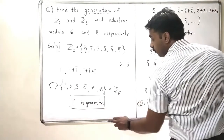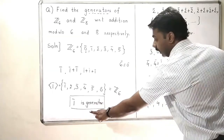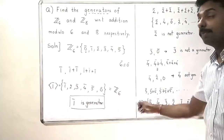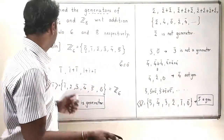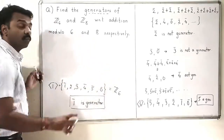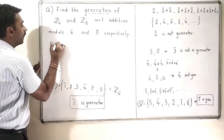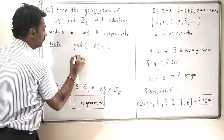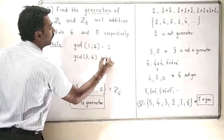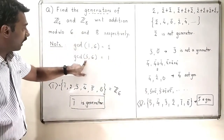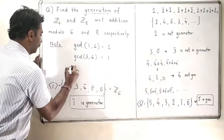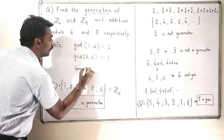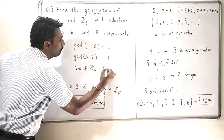If you observe carefully, 1 bar and 5 bar are generators of Z6. Notice one important fact: 1 and 5 are relatively prime with 6. The GCD of 1 and 6 is 1, and the GCD of 5 and 6 is also 1, and that is the reason 1 bar and 5 bar have become the generators of Z6. So the generators of Z6 are 1 bar and 5 bar.